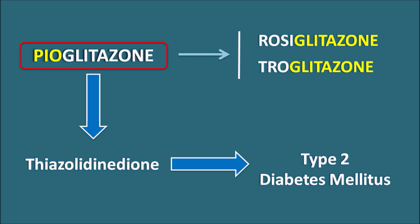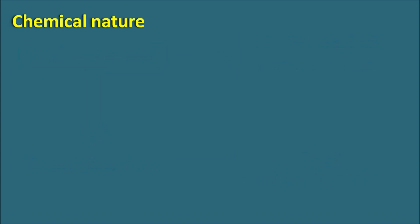Pioglitazone does not increase insulin secretion; it requires sufficient insulin levels already present in the body. It may therefore be prescribed alongside drugs that increase insulin secretion. The main role of pioglitazone is to increase insulin sensitivity, because in type 2 diabetes mellitus insulin resistance develops — insulin action and its ability to control blood glucose are reduced. We will see how this drug increases insulin sensitivity and what its important side effects are.